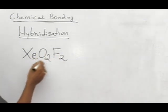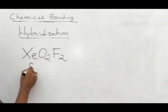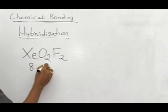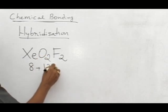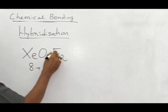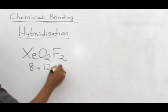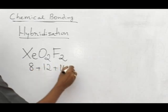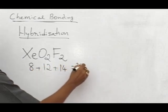Now we can count the number of valence electrons. Xenon contributes 8 and 2 oxygen atoms are there, therefore 6 into 2, 12. Now fluorine is a halogen, each halogen has 7 electrons, therefore 2 into 7, 14. Now you take 14 plus 12, 26, now we have 34 electrons total.